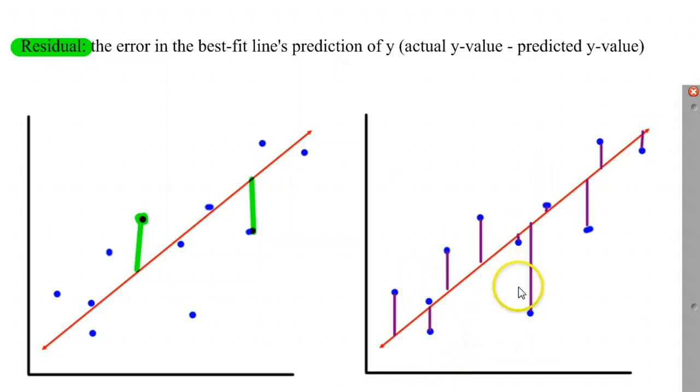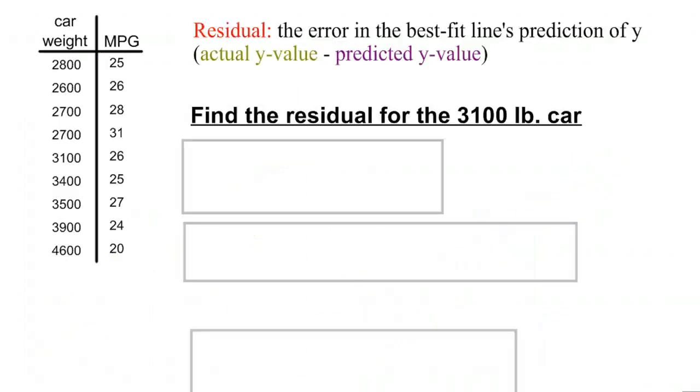So all of these residuals here, when you're calculating out your least squares regression, if you were doing what the calculator does, you would be squaring each of these residuals. And then so finally, let's see if we can find the residual for a 3100 pound car.